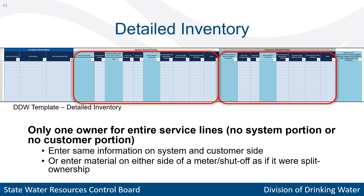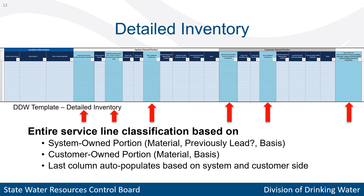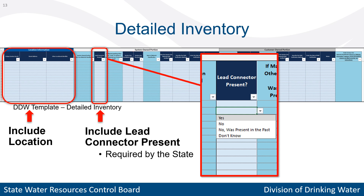Or, if a meter or shutoff valve is present, you could identify the material on either side as if there were split ownership. The highlighted columns with the aqua color in the template are used to classify the material for the entire service line in the last column, which automatically classifies the entire line based on the materials entered on the system side and customer side. Please enter location information and whether any lead connectors are present for each service line to avoid errors. The state specifically wants to know about lead connectors in the system, so be sure to fill out that column.